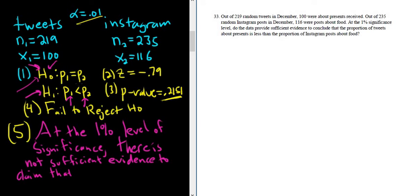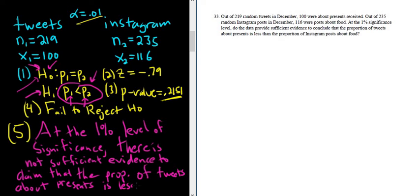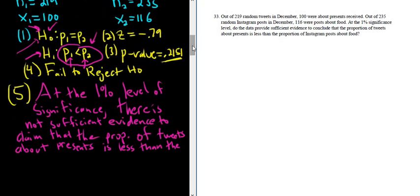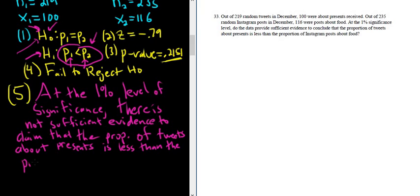Typically when we reject H0, then there is enough evidence to support H1. In this case, we failed to reject H0, so there is not enough evidence to support H1. So there is not sufficient evidence to claim that. And usually you can go to the last sentence, everything after the word that. The proportion of tweets about presents is less than the proportion of Instagram posts about food. So I'll just scroll down. And then the proportion of Instagram posts about food.